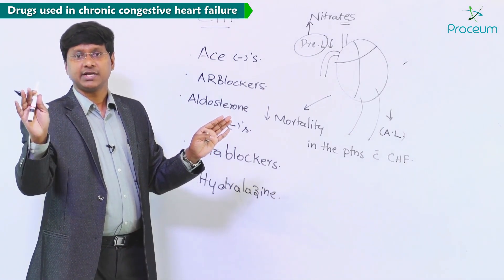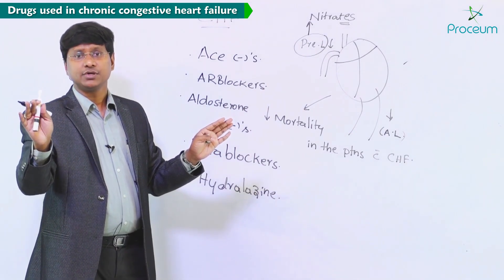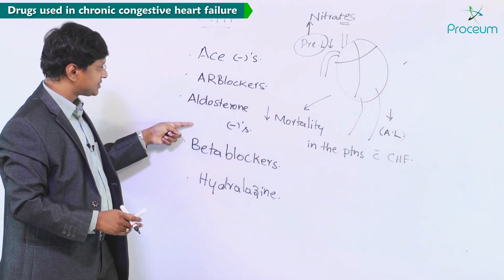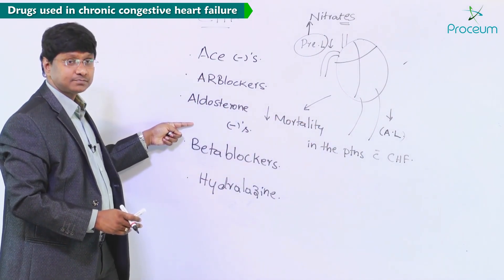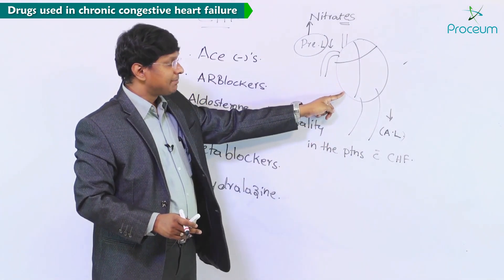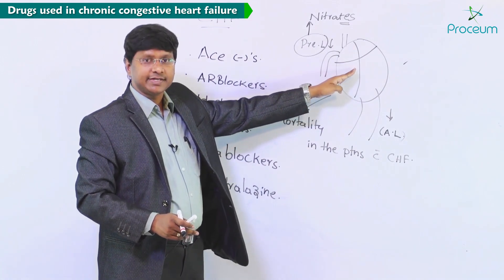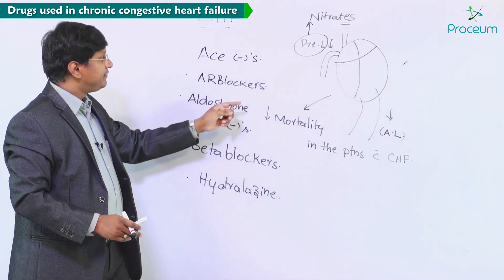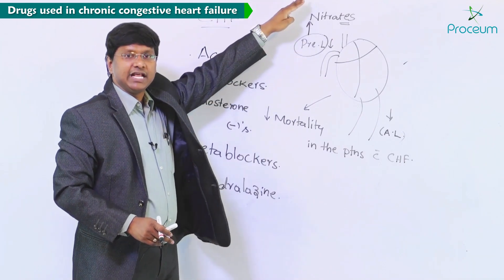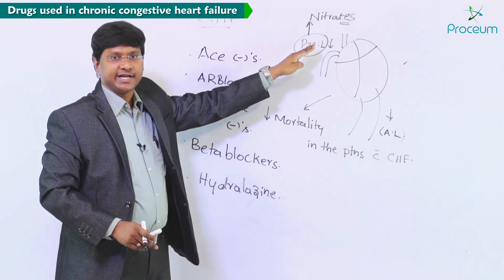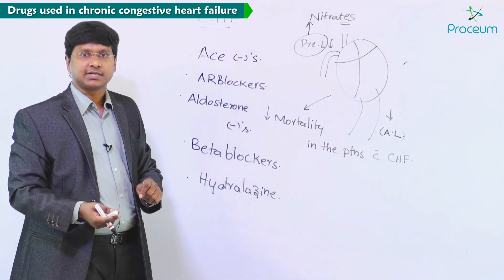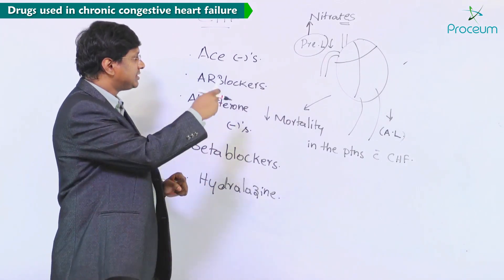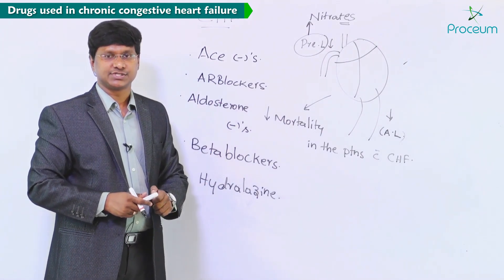So in a patient with chronic congestive heart failure, we are trying to reduce the afterload with this group of drugs, reduce myocardial contractility with beta blockers, and reduce the preload with the help of nitrates. Next, let me discuss individually about each of these particular groups of drugs.